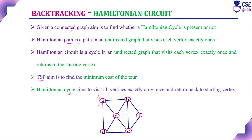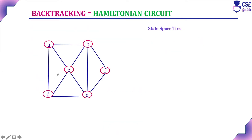The Hamiltonian cycle aims to visit all vertices exactly only once and return back to the starting vertex where the cycle initially started. This is nothing but the Hamiltonian circuit. In this Hamiltonian circuit problem, we are going to implement it using the backtracking technique. For example, consider this graph, and we will consider the starting vertex to be A — start from A, visit all other vertices exactly only once, and finally return back to A. We will implement this using backtracking with the help of a state space tree.